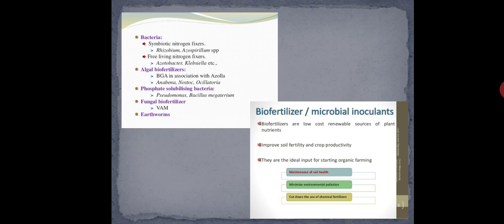Next is phosphate-solubilizing bacteria. It works similarly to nitrogen-fixing bacteria in promoting plant growth. Plant growth requires not only nitrogen but a combination — if you have seen a packet of biofertilizer, it shows NPK, which stands for nitrogen, phosphate, and potassium. Phosphate-solubilizing bacteria solubilize phosphate and provide it to the plant for growth. Examples are Pseudomonas and Bacillus megaterium.